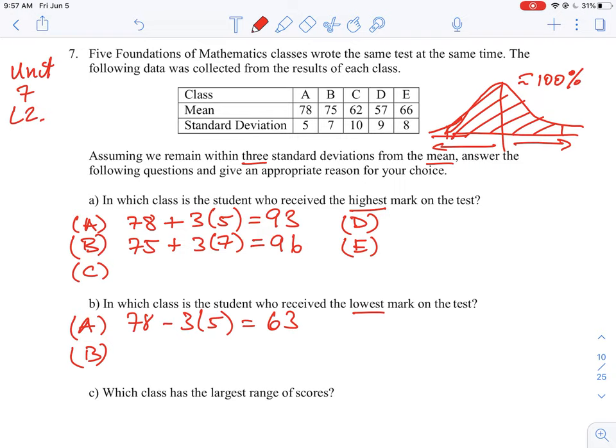So which is going to be 78, 75 minus 3 times 7. So that's 75 minus 21. That should give us around 54. And then so on. So you're going to keep going for each of those classes, and then the one with the lowest score is going to be the class that would have the lowest mark and you can be almost 100% sure of that.